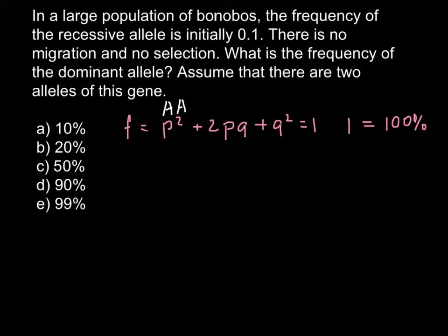2pq stands for the frequency of the heterozygous, and q² stands for the frequency of the homozygous recessive alleles. Confusion in this problem might be because the question is given on one scale and the answer is given on the other scale.